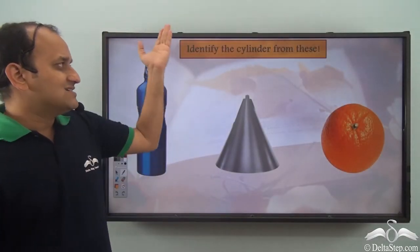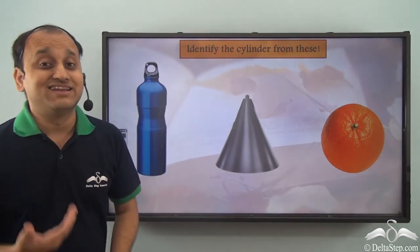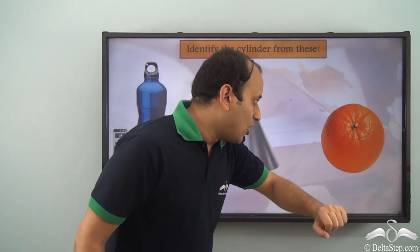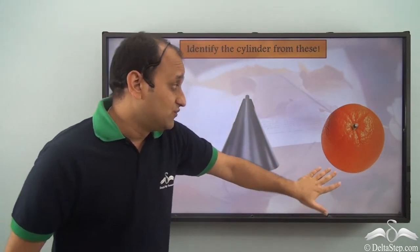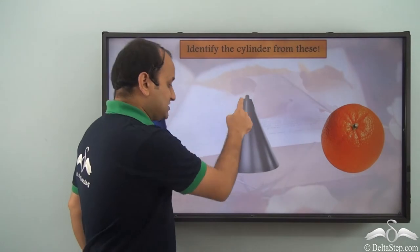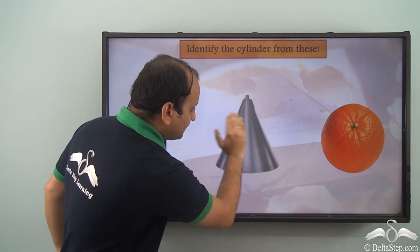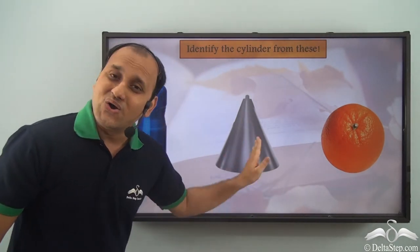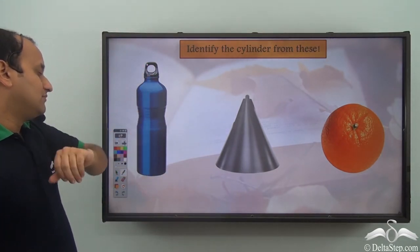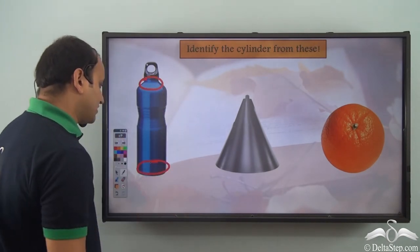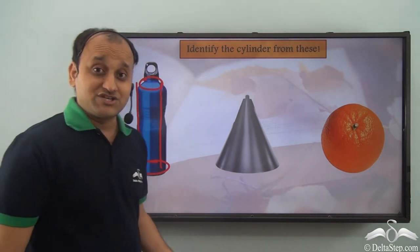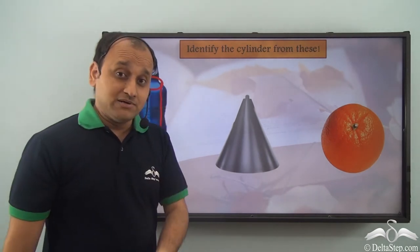Can you identify the cylinder from these objects? This orange is round from whichever angle you see, so it resembles a sphere. This lampshade is curved, tapers off to give one vertex, and is circular at the bottom — so it is actually conical shape. This particular bottle is circular at the top, circular at the bottom, and then it stretches with one curved surface joining the two circles — which is the cylindrical shape. So this bottle resembles a cylindrical shape.